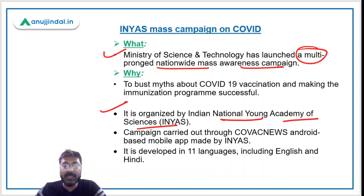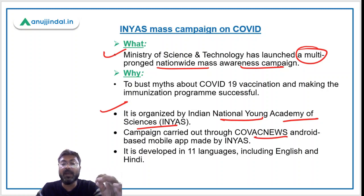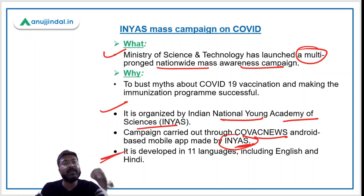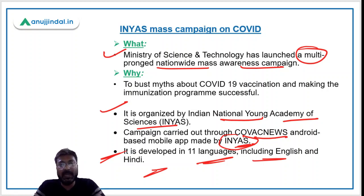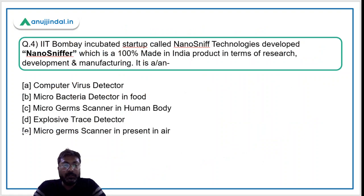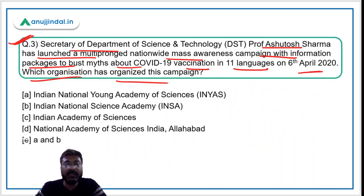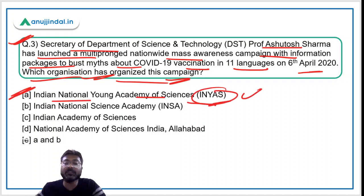The campaign has been organized by the Indian National Young Academy of Sciences, also known as INYAS. This campaign is carried out through an app called COVAS News, developed by INYAS for this purpose. The app has been developed in 11 languages including English and Hindi. The purpose of the campaign is to bust myths about COVID-19 vaccination and make the immunization program successful. The correct answer is option A — Indian National Young Academy of Sciences.